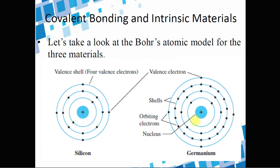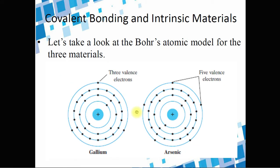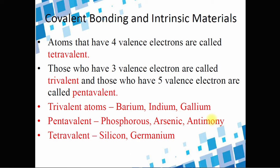Let's look at Bohr's model for these three materials. Silicon has four valence electrons, and germanium also has four valence electrons. For gallium arsenide, gallium has three valence electrons and arsenic has five electrons, so in covalent bonding they have eight valence electrons. Atoms with four valence electrons are called tetravalent. Those with three valence electrons are called trivalent, and those with five are called pentavalent.